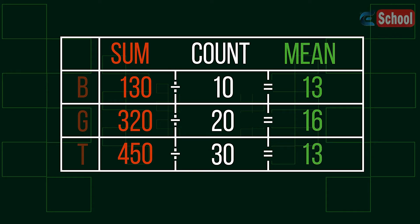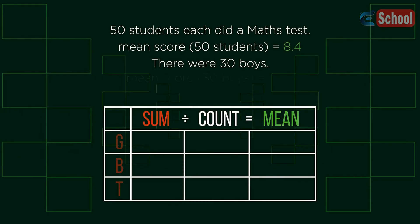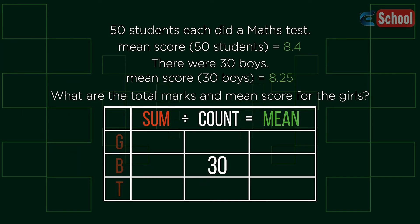Looking at how we tackle this problem will help us see how to reverse it. By putting the values into a table like this, we can use the mean equation to work out the individual means. We can similarly use this table to help us find initial unknown sums or counts.